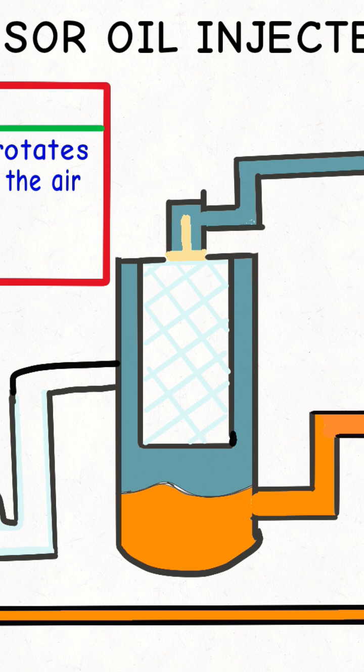Stage 3: The screw element rotates to increase pressure. The rotating screw elements compress the air by reducing its volume, increasing the air pressure inside the chamber.